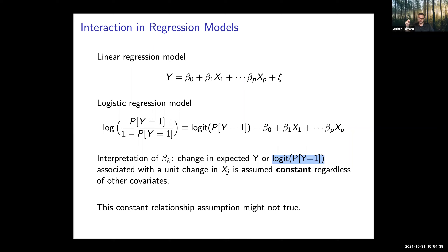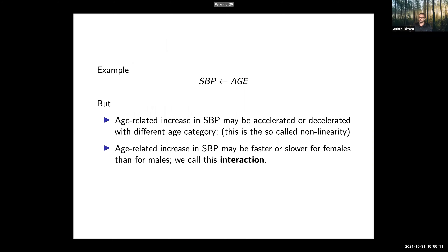This one-unit change is assumed constant regardless of other covariates, but this constant relationship assumption may not always be true. One example may be that changes in blood pressure are not linearly associated with age — so these changes in blood pressure may not be linearly associated with age.